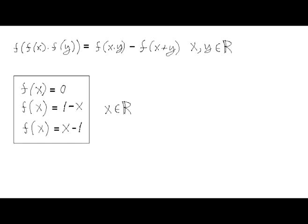Conclusion: we have identified the following functions that satisfy the given functional equation. First, f(x) = 0. Second, f(x) = 1 - x. Third, f(x) = x - 1. We have proved that the functional equation forces exactly these three functions, and there are no others. I think this problem is harder than Problem 3 from this year's IMO. Thank you.